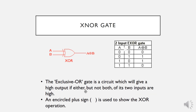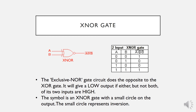We have two special gates. The first is called the exclusive OR, or XOR gate, which gives a high output if either — but not both — of its two inputs are high. So if only one of the inputs is high, the output is high; if both are high, the output is not high. A circled plus sign is used to show the exclusive OR operation, written as A XOR B. The truth table shows the relation between input and output.